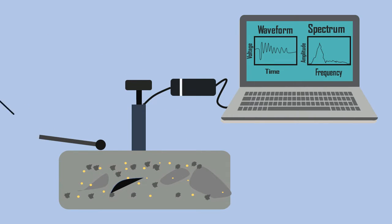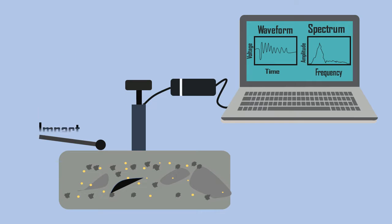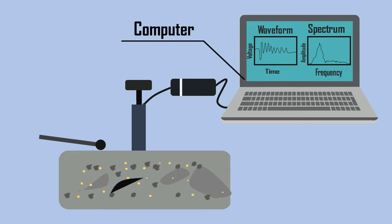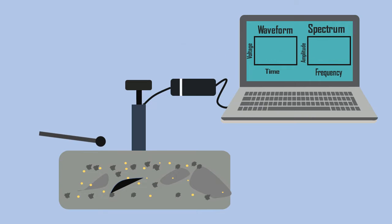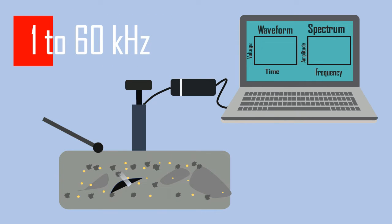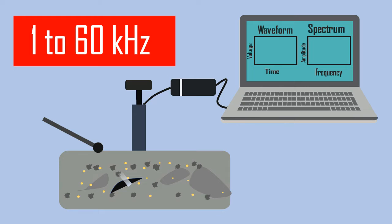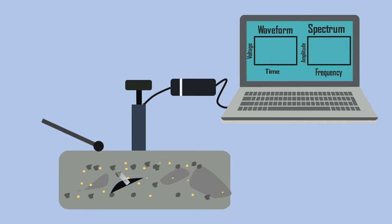The entire setup is shown on the screen. It consists of a transducer which can receive the stress generated by impact and is connected to a computer to monitor the waveform and spectrum. The impact is produced by tapping against a concrete surface which generates low frequency stress waves of 1 to 60 kHz that propagate into the structure and are reflected by flaws and external surfaces.